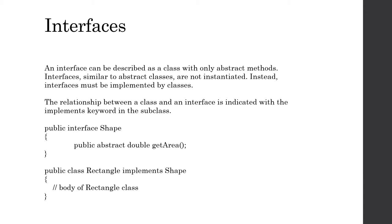Any class that wants to implement those abstract methods will indicate as such in its class header. For example, we have public interface Shape with a single abstract method: public abstract double getArea. Inside the Rectangle class, we tell it to implement the Shape interface, then write code to implement that abstract method along with anything else in the Rectangle class body.